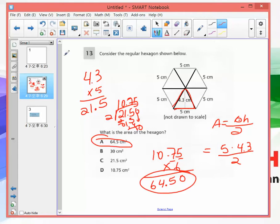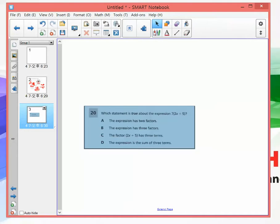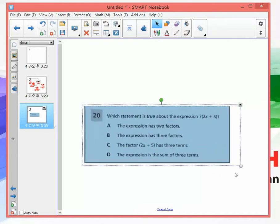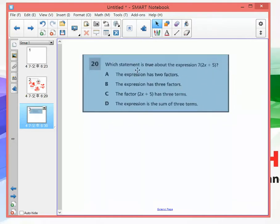Let me just make this bigger. Which statement is not true about the expression? The expression has two factors. Well, what's happening here? You're multiplying this guy times this guy.